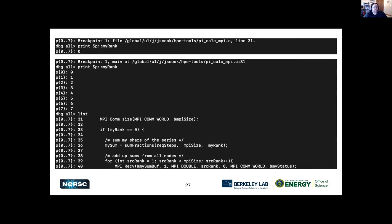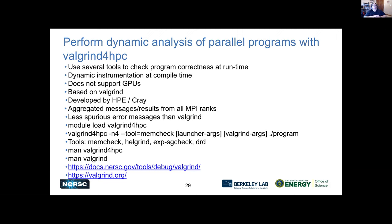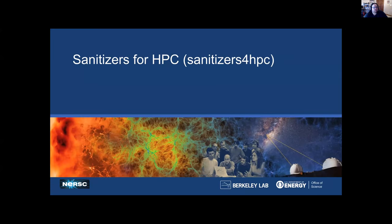Similarly, there's Valgrind for HPC. This uses a bunch of different tools to do memory checks with dynamic instrumentation at runtime. It doesn't support GPUs at the moment but supports other parallel programming models like MPI. It runs Valgrind against each of your MPI processes and aggregates the data into a more readable report rather than producing N separate reports, and it also improves on the messaging you'd normally get from Valgrind.